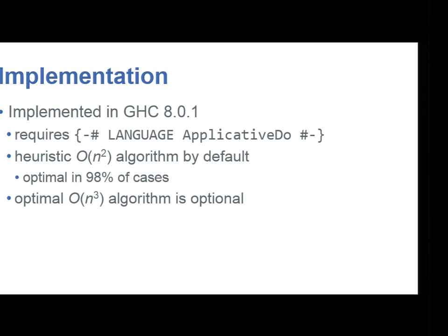So we did an implementation of this. It's in GHC 8.0.1. It's optional because you have to say to GHC that I don't mind you exploiting the laws, because nothing else is forcing you to write applicatives that satisfy the laws. So it's an optional feature. We use a heuristic algorithm by default. Our heuristic algorithm is N squared. But optionally, you can request the optimal algorithm if you want to. Now, the heuristic algorithm was optimal in 98% of cases. That's 98% of do expressions gave the same answer in both cases.